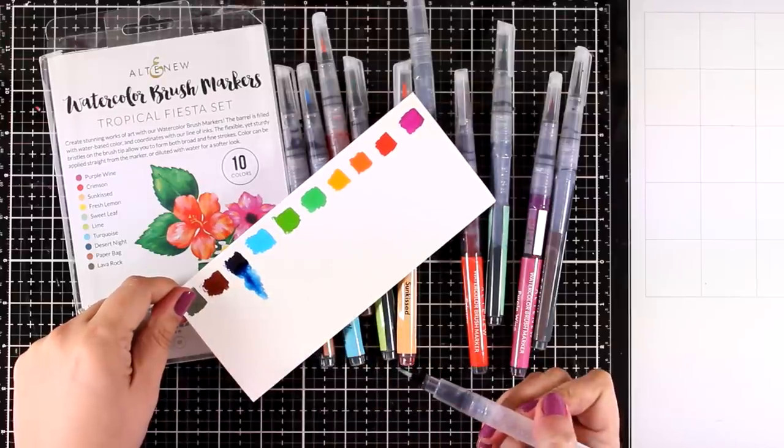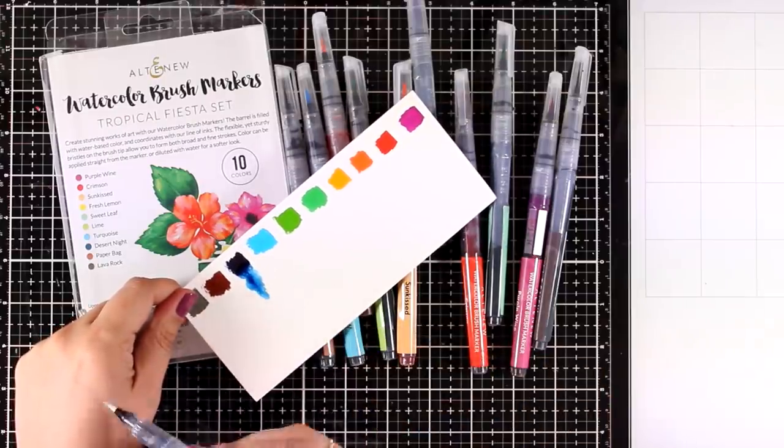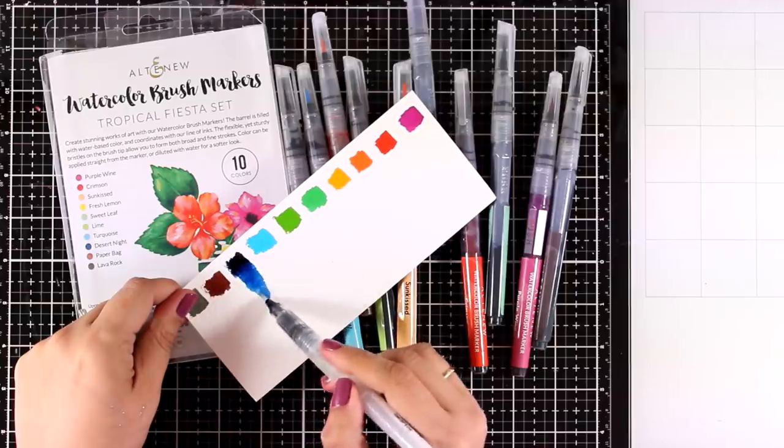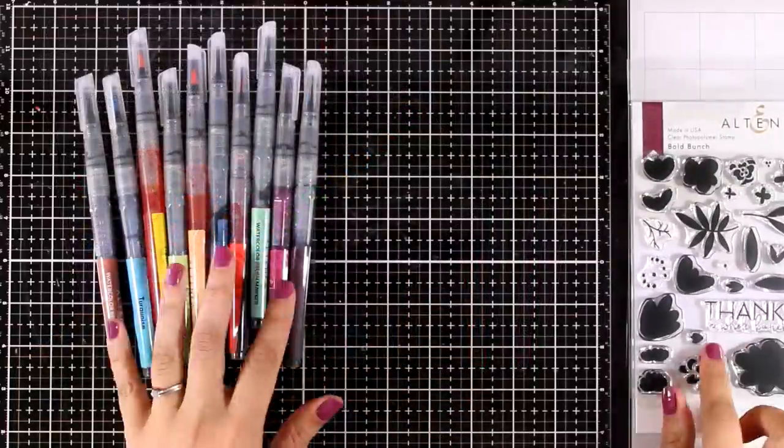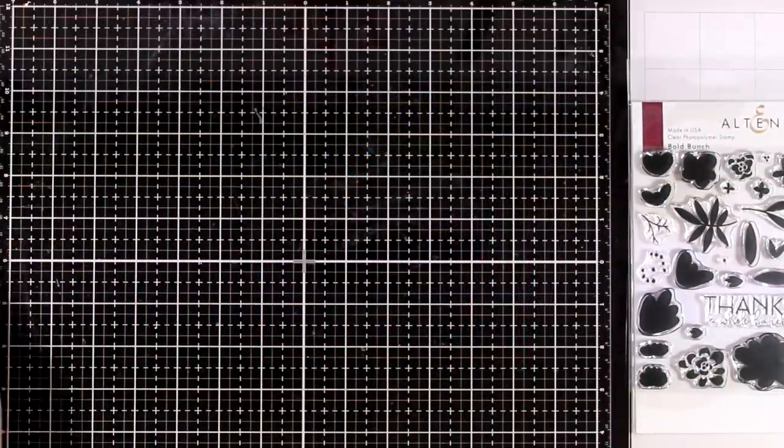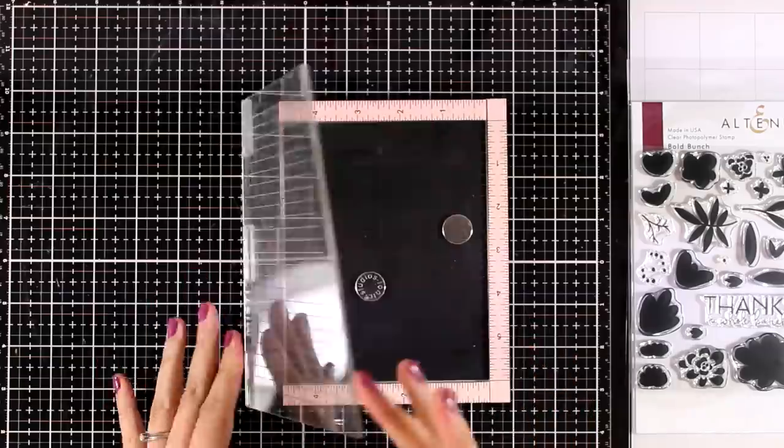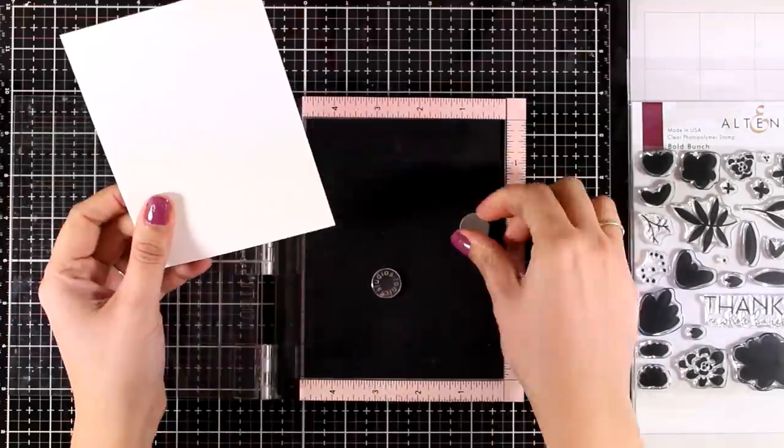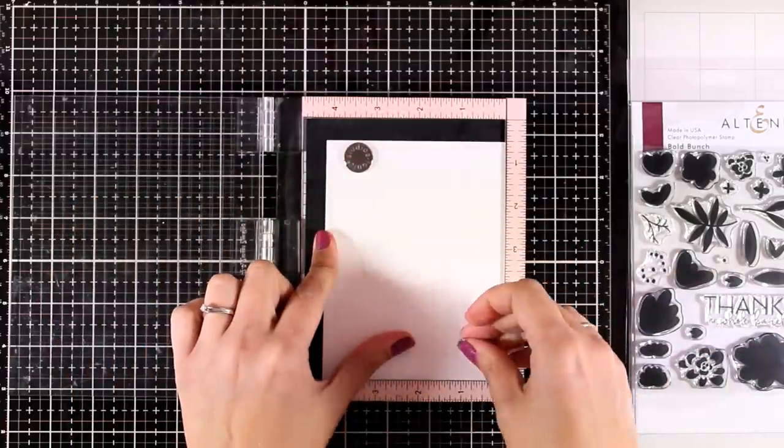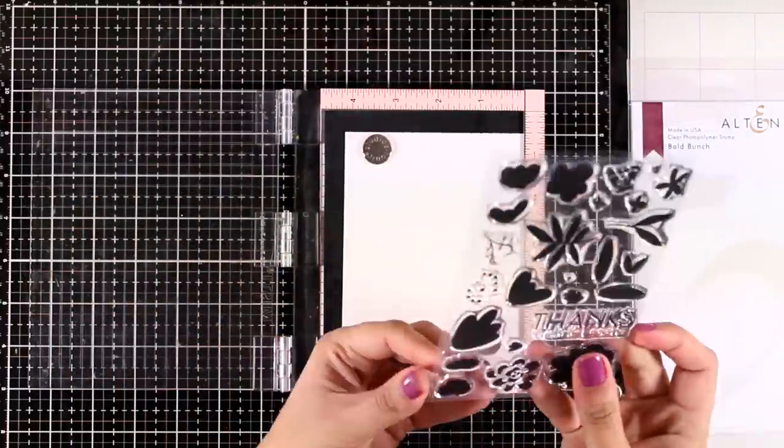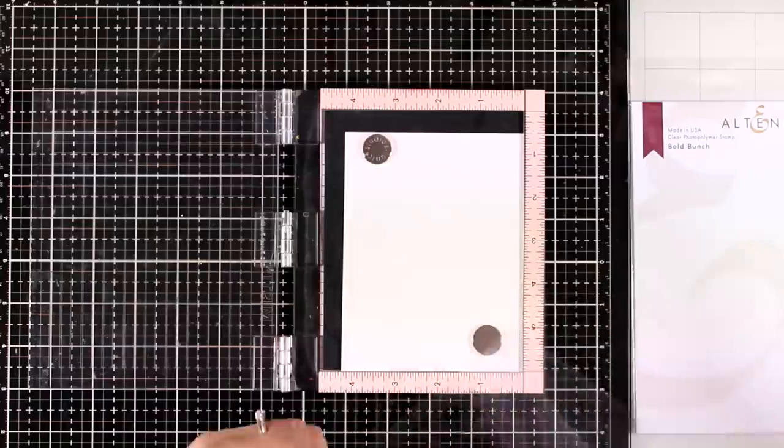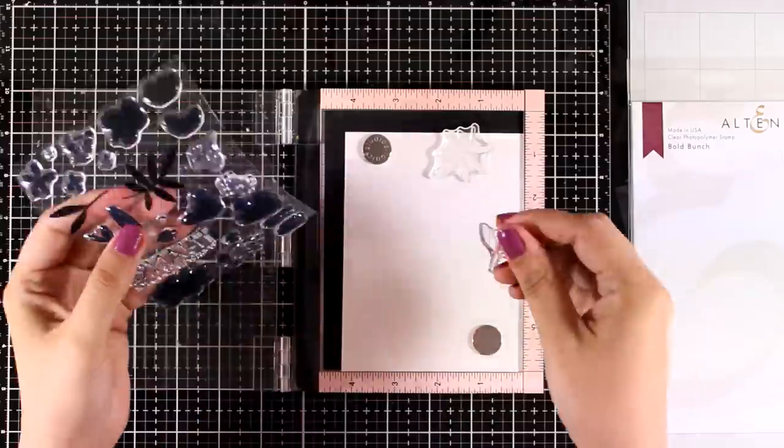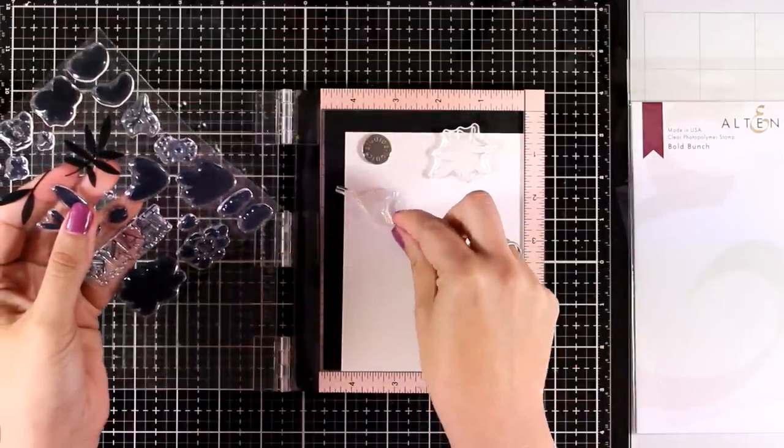This one is called Desert Night. It does look like black but depending on how much water you use you can get all shades of blue. I like working with these watercolor brushes and I did make videos with the previous sets which I'm going to link at the end of this video. There are many ways to use those brushes. The typical one is to stamp your image and color it in, but today I'm going to show you three examples on how you can use these brushes to get the perfect watercolor look without effort at all.